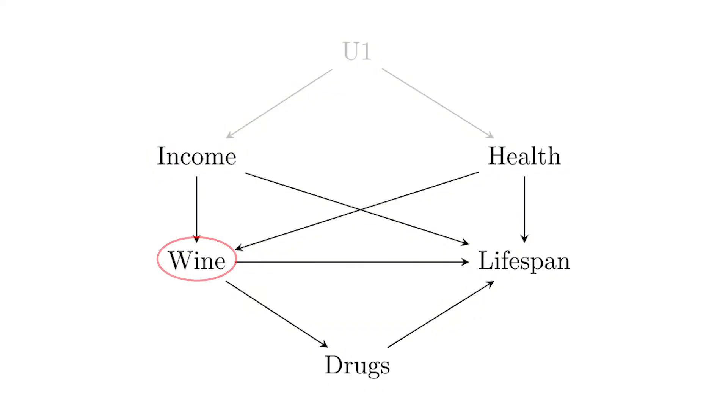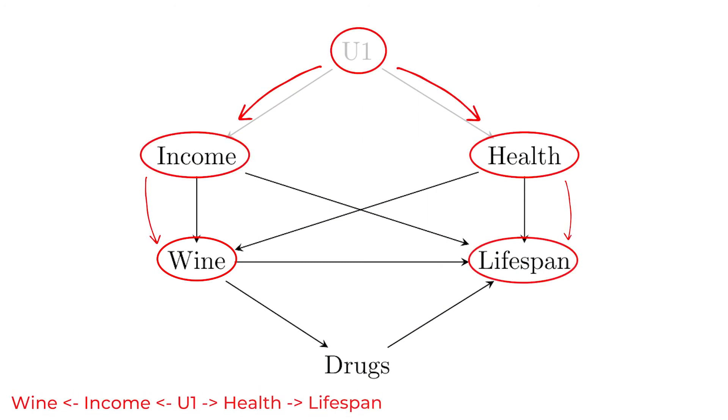Once a path is closed, it can no longer induce a relationship between our two variables of interest. For instance, if there's no variation in health, we can no longer say that naturally healthy people drink more and live longer. That pathway is closed, and so is every other pathway that health sits on — such as wine to income to U1 to health to lifespan.